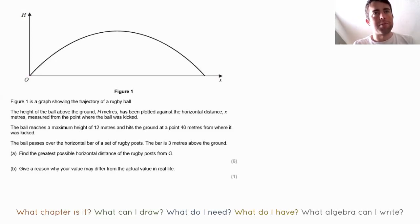The ball reaches a maximum height of 12 meters and hits the ground at 0.40 meters. I have in my mind this question: what can I draw? Now I already have a graph drawn here but what I can do is add to that graph the information as I read it. So the maximum height of 12 meters is there and it hits the ground at 0.40 meters from where it was kicked. So I'm writing those on the graph as soon as I read it.